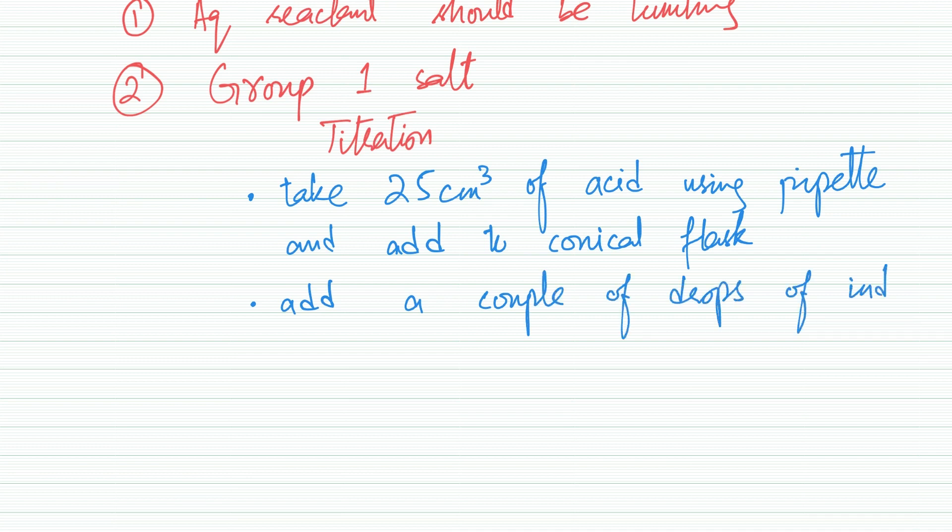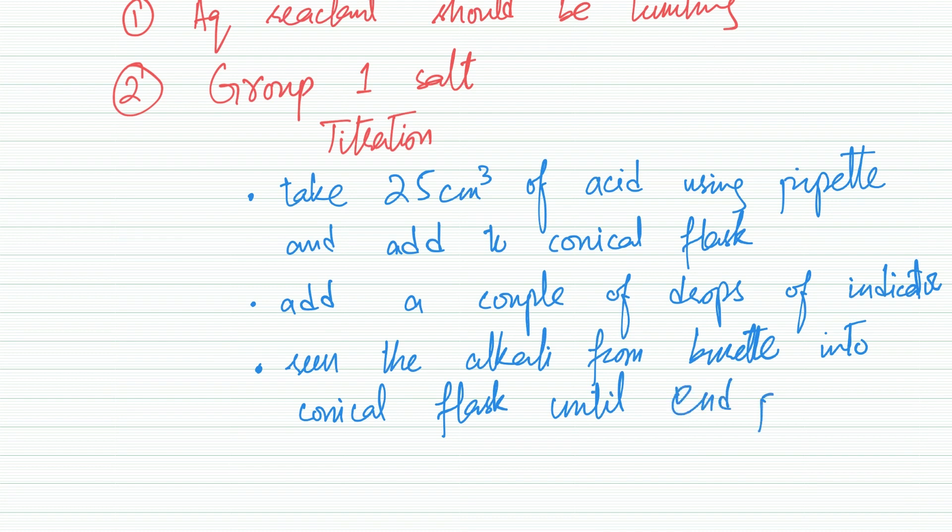This will tell us how much of alkali we need to add. Next, run the alkali from the burette into the conical flask until the end point. End point is basically when the indicator changes color. Now you know how much volume of acid to take and how much volume of alkali to take.